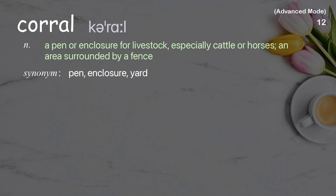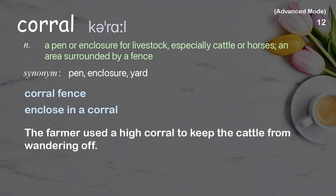Corral: A pen or enclosure for livestock, especially cattle or horses; an area surrounded by a fence. Examples: Corral fence. Enclose in a corral. The farmer used a high corral to keep the cattle from wandering off.